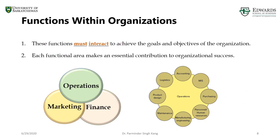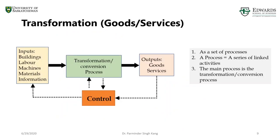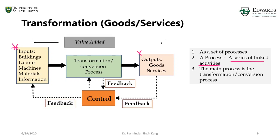From here let's explore the operations function area in a bit more detail. As we go through the next few slides we're going to look into some examples, but before those examples let's clarify some terminology. A generic term I'm using is a transformation process or conversion process. A process represents a series of linked activities, and each process always has certain inputs which are transformed into certain outputs. Two more attributes make operations effective and efficient: feedback and control.